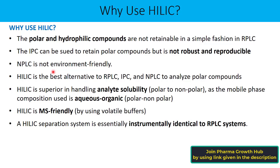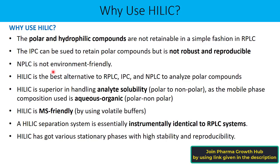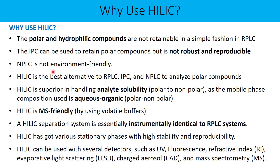A HILIC separation system is essentially instrumentally identical to an RPLC system. The mobile phase composition is almost similar — organic plus aqueous in both cases — so there is no significant difference as far as the instrument is concerned. Only the column (stationary phase) is different, which is not part of the HPLC instrument itself. HILIC offers various stationary phases with high stability and reproducibility. Last but not least, HILIC can be used with several detection techniques including UV, fluorescence, RI, ELSD, CAD, and mass spectrometry.